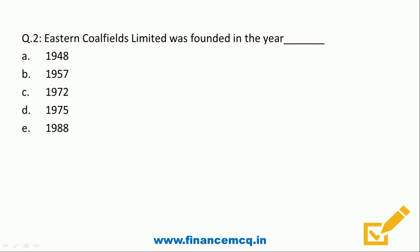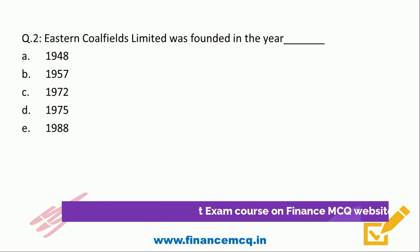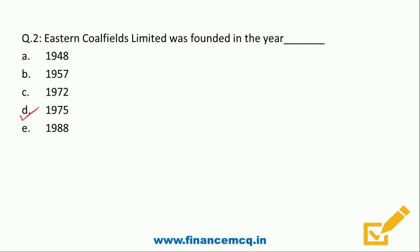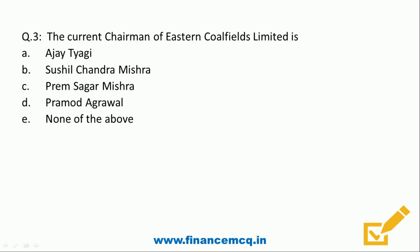Question two: Eastern Coalfields Limited was founded in which year? Option a) 1948, option b) 1957, option c) 1972, option d) 1975, option e) 1988. The correct answer is option D - 1975. It was founded when the nationalization of coal fields took place. These are important questions about the company for which you are appearing in the examination.